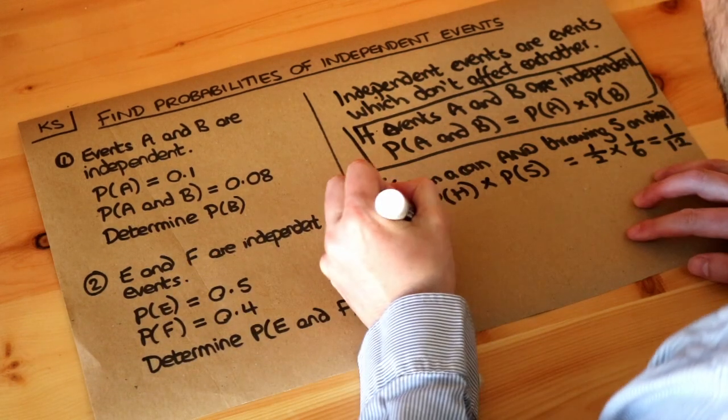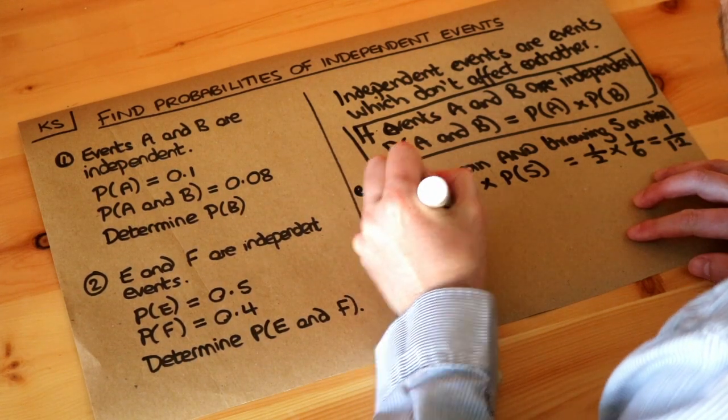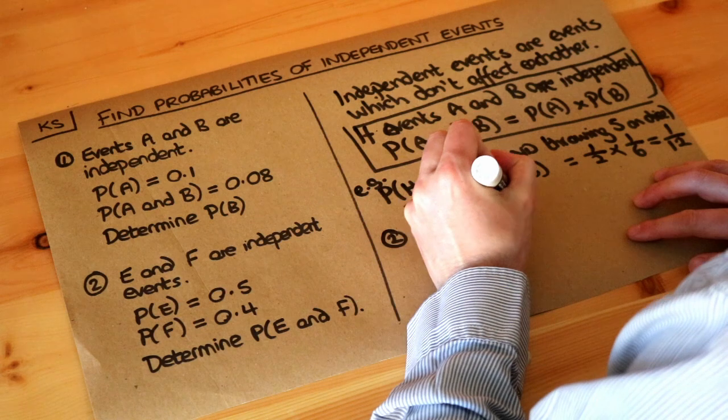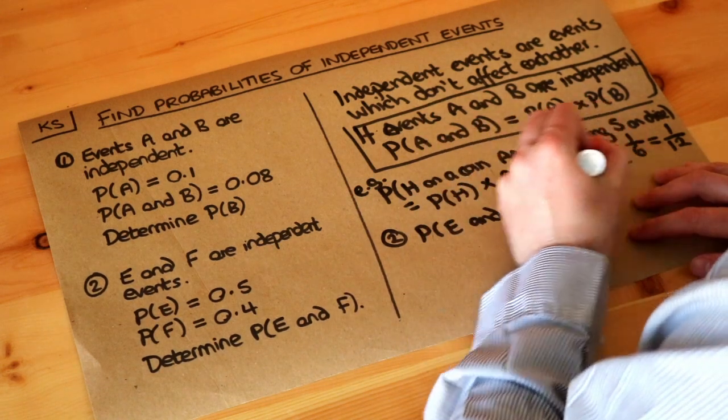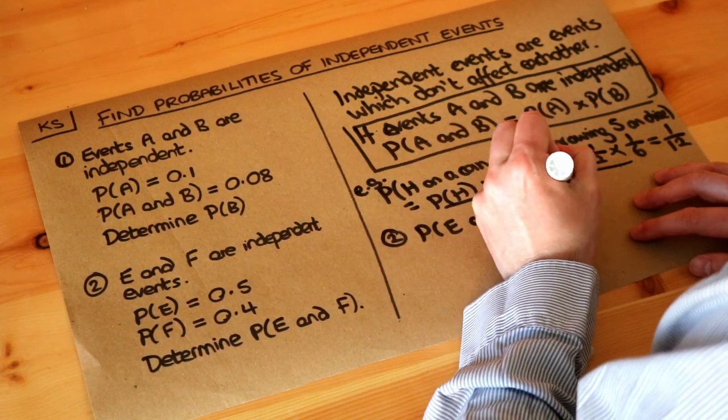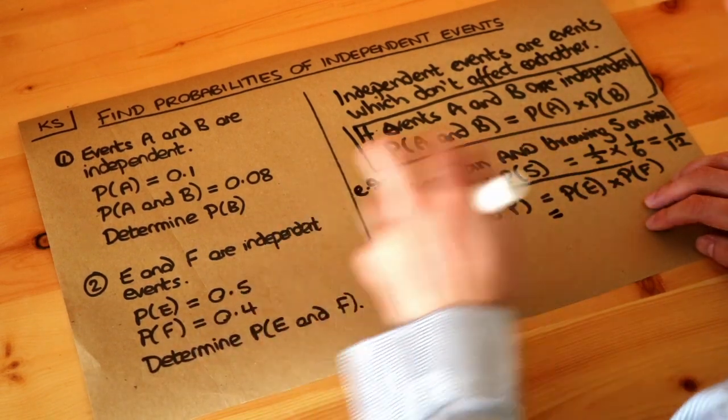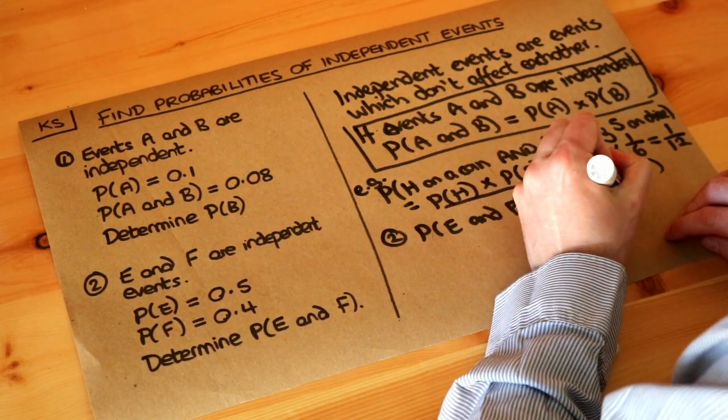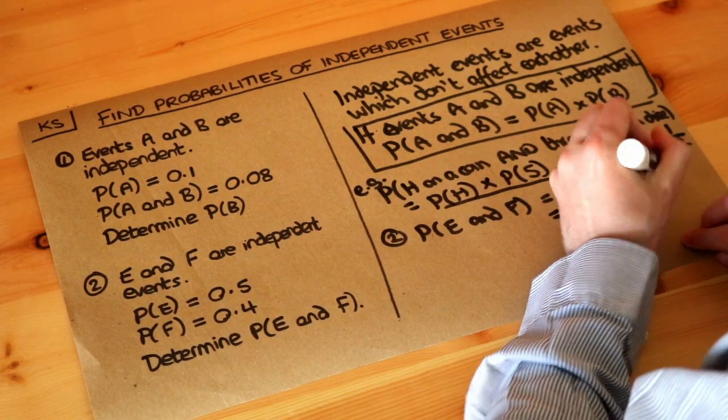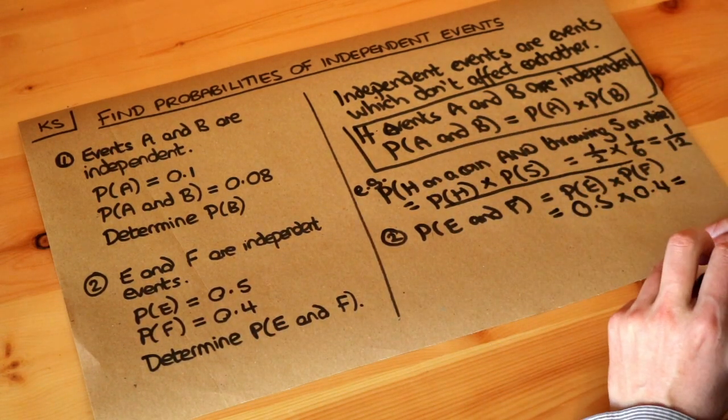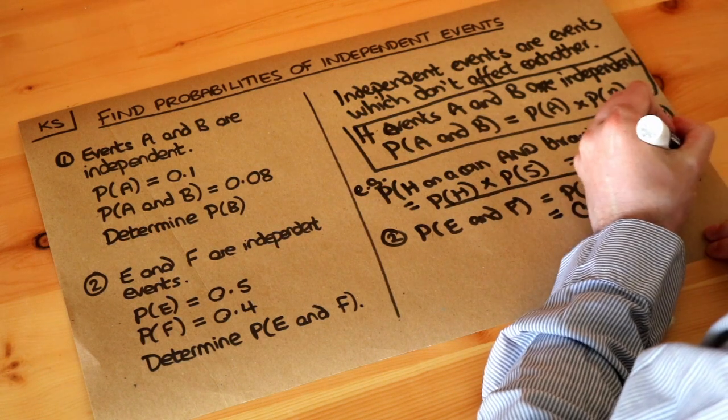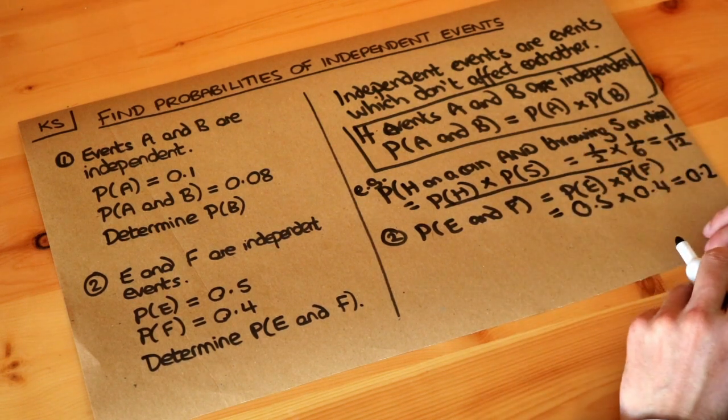E and F are independent events, so let's write out the formula. The probability of E happening and F happening is equal to the probability of E times the probability of F. So that's going to be equal to the probability of E, which we're told is 0.5, times the probability of F, which is 0.4. If we multiply those together on our calculator or in your head, you get 0.2. So that is the final answer.